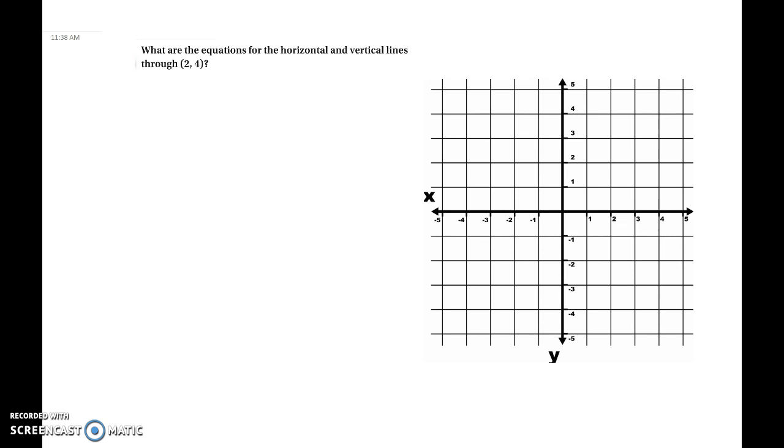So it passes through the point (2, 4). So it passes through this point here. Our horizontal line will draw in red, and our vertical line will draw in purple.